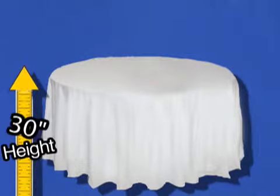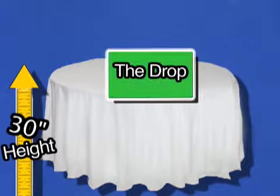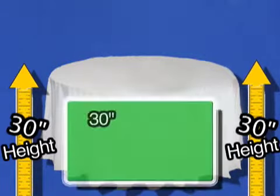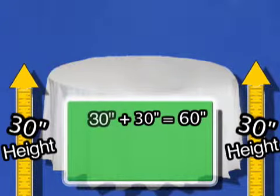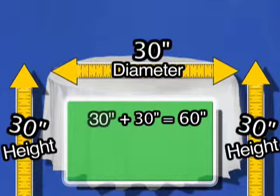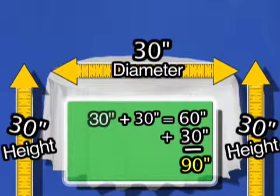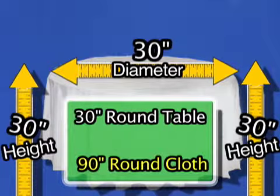Standard table height is 30 inches. For the cloth to touch the floor — also referred to as the drop — think 2 times 30: 30 inches height plus 30 inches height equals 60 inches. Then simply add 60 inches to the diameter of the table, in this case 30 inches, and the total is 90 inches. So a 30 inch round table gets a 90 inch round cloth.